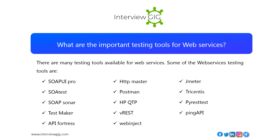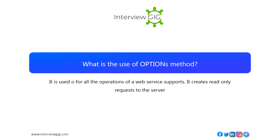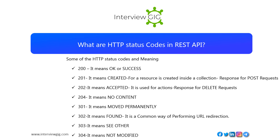What is the use of the OPTIONS method? It is used for all the operations a web service supports. It creates read-only requests to the server. What are HTTP status codes in REST API?